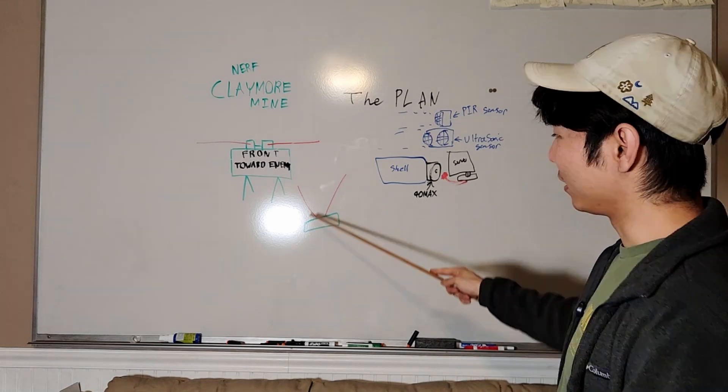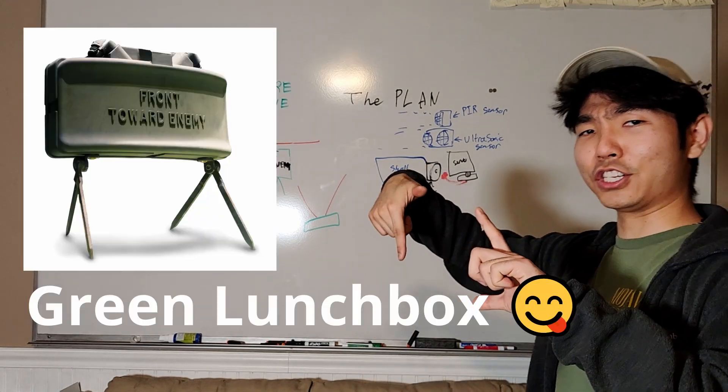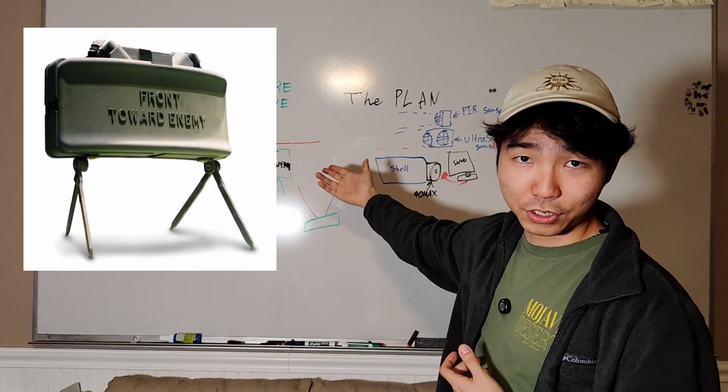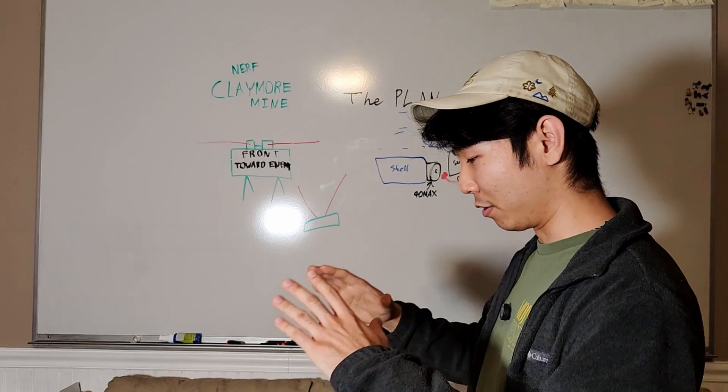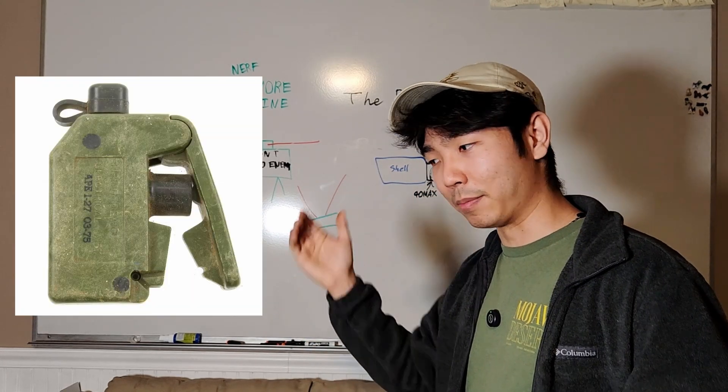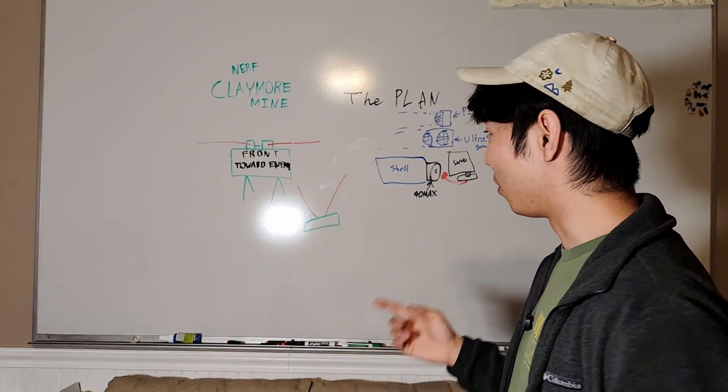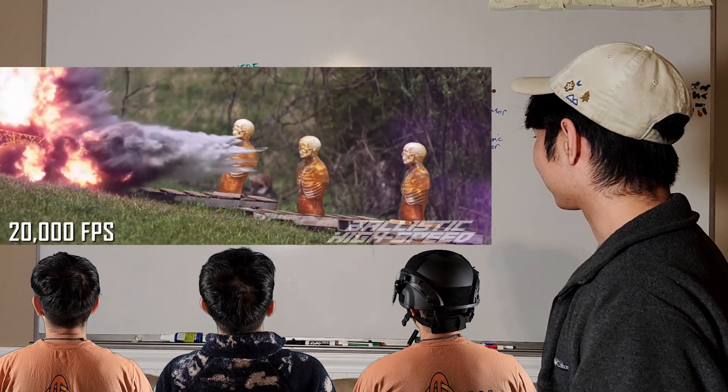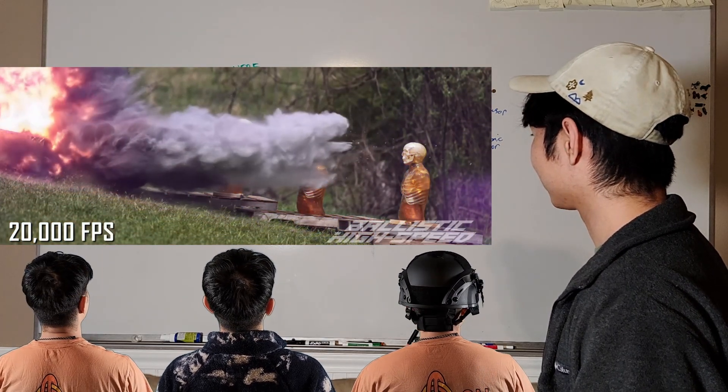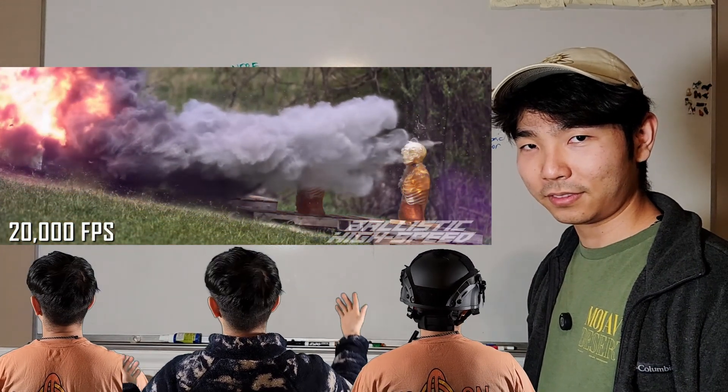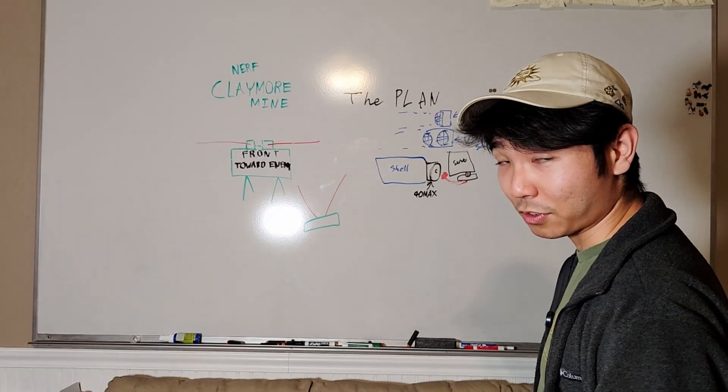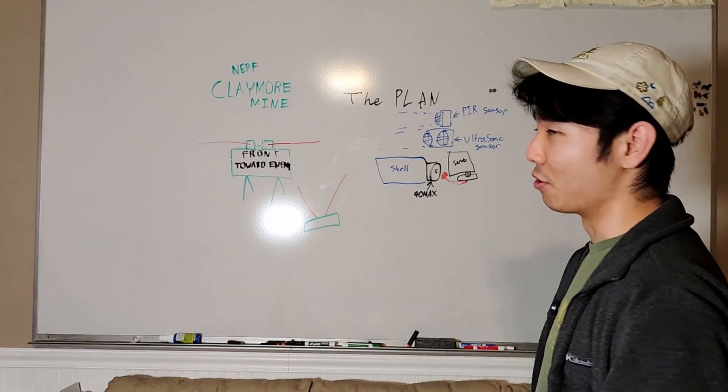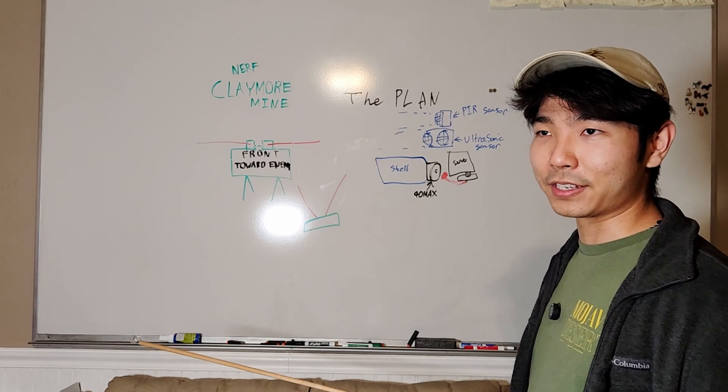Now a real claymore mine looks like a little green lunch box, says 'front towards enemy' on the front. You monitor the mine at all times and press the remote when you want it to fire off. We're gonna be making a nerf version of that.